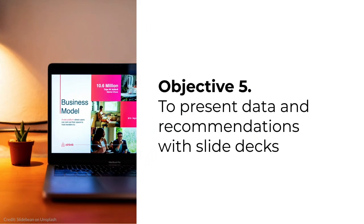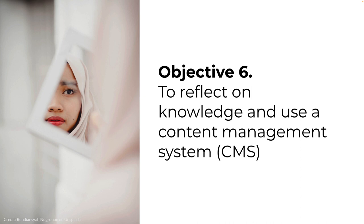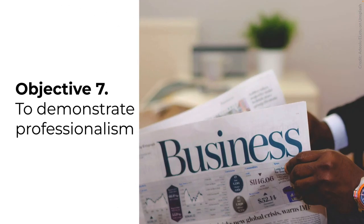The fifth objective is for you to present data and recommendations with slide decks. This is how you'll document your insights from a team project you'll complete near the end of the course. The sixth objective is for you to reflect on your knowledge of writing style and development of new writing skills. You're going to do this through written blog posts in a content management system or CMS like WordPress. The final seventh objective is for you to demonstrate professionalism through actions such as responding quickly to teammates or to me, being truthful, taking responsibility for your learning, and accepting constructive criticism. To achieve these seven objectives and complete the course requires that you move through eight week-long modules of content.